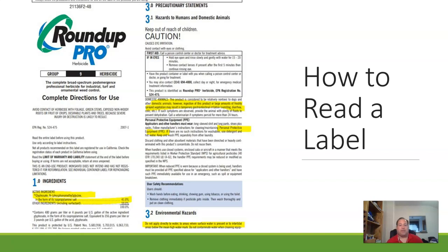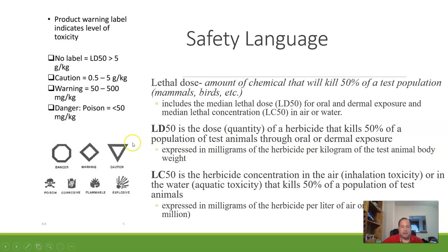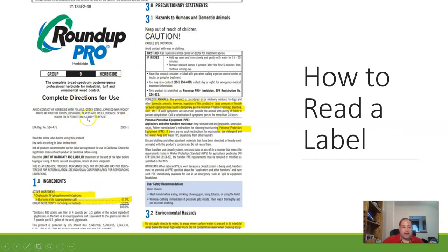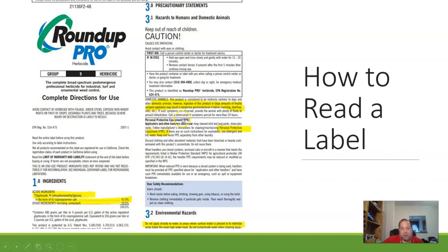Labels are a really big part of safety. When you see a label like this, the active ingredient is important — in this case it's glyphosate, and it tells you that 41% of the Roundup herbicide is glyphosate, with the rest being surfactants and other ingredients that help it stick to the surface. Right here it says personal protective equipment: applicators and other handlers must wear a long-sleeve shirt, long pants, shoes plus socks — it tells you exactly what you need.